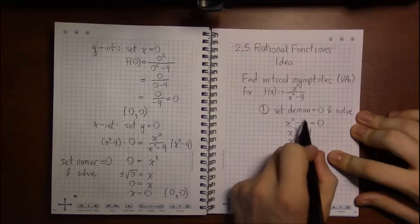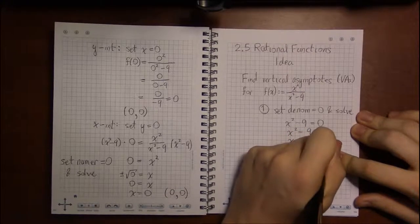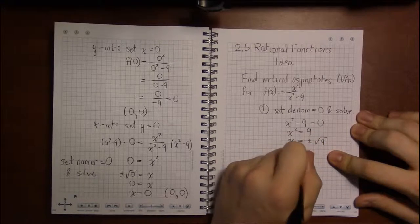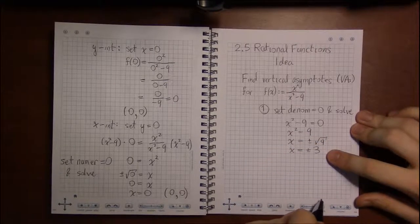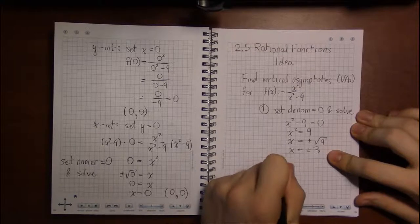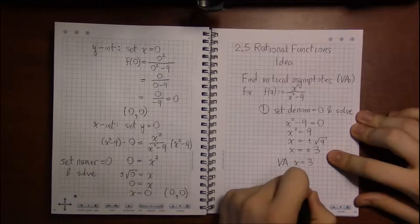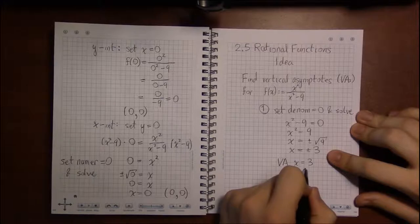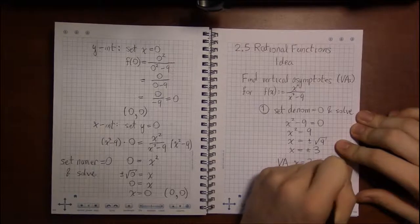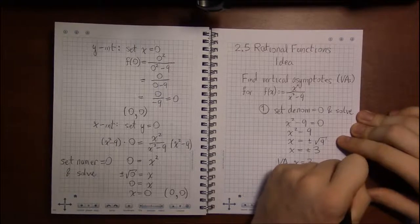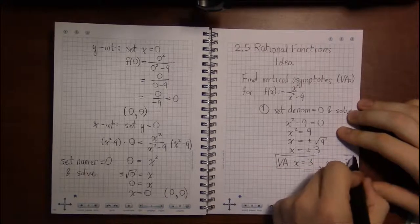And we can do that because we just have an x squared. There's no x term. So x is going to be plus or minus the square root of 9. And the square root of 9 is a nice number. It's 3. So our two vertical asymptotes are going to be x equals 3 as one asymptote. So the vertical line passing through x equals 3 crossing the x axis at 3 and the vertical line crossing the x axis at minus 3. These are the two vertical asymptotes.